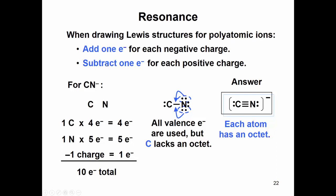If you have a positive charge, then when you're adding up your valence electrons, you would subtract an electron for every charge.